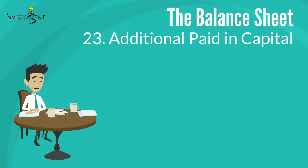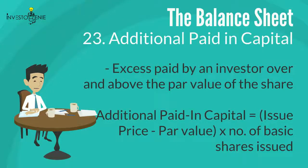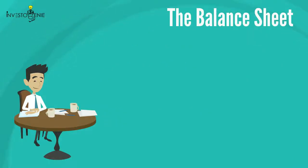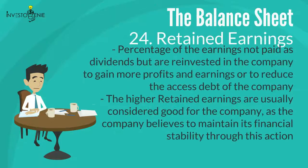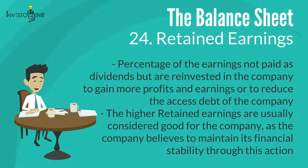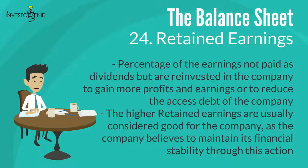Twenty-three: additional paid-in capital (APIC) is the excess paid by an investor over and above the par value of the share. It is calculated as: APIC equals issue price minus par value price, multiplied by the number of shares issued. Twenty-four: retained earnings of the company is the percentage of earnings not paid as dividends but reinvested in the company to gain more profits and earnings or to reduce excess debt. Higher retained earnings are usually considered good for the company, as it believes in maintaining financial stability.